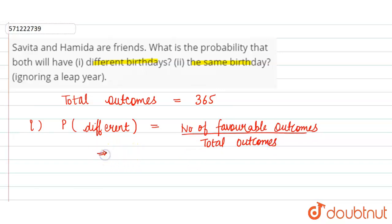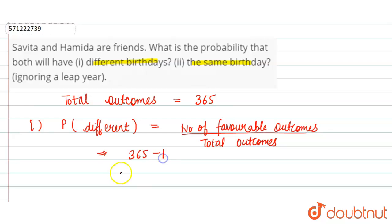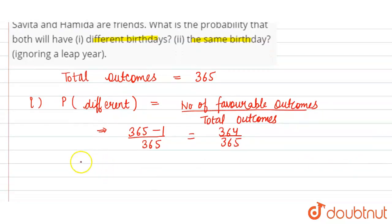If Hamida's birthday is different from Savita's birthday, the number of favorable outcomes will be equal to 365 minus 1, divided by total outcomes of 365. So 365 minus 1 is 364, divided by 365. This is the probability of Savita and Hamida having birthdays on different days.